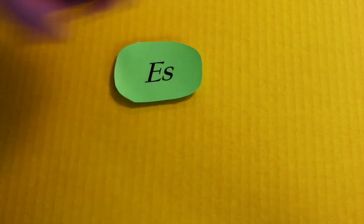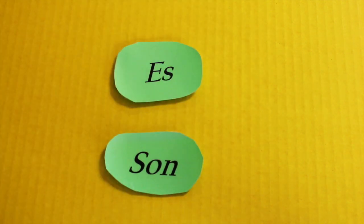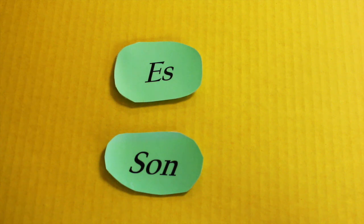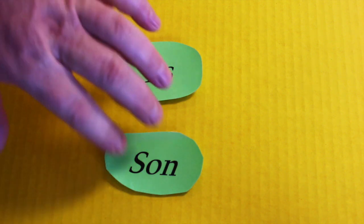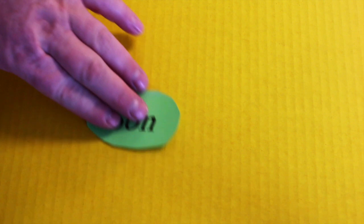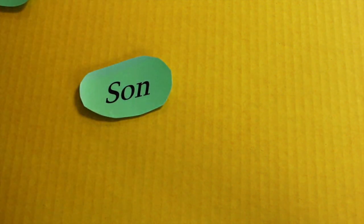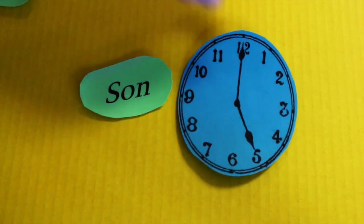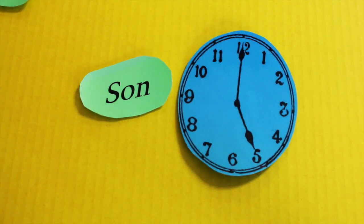Now with time, it's a little different. With time, you're only going to use es or son. Es goes with one o'clock: 'es la una,' 'es la una y media' — it's 1:30. And then son goes with everything else: 'son las dos,' 'son las tres,' 'son las cuatro,' 'son las cinco' — it's five o'clock. So that's how telling time works.